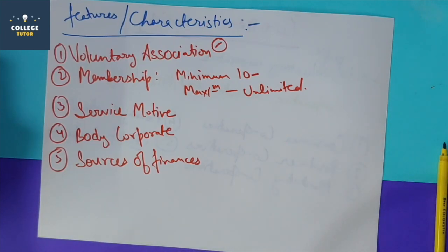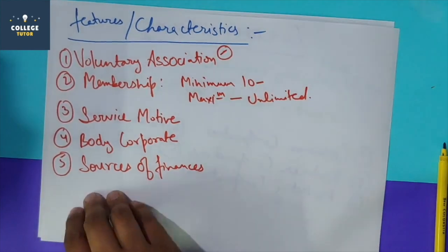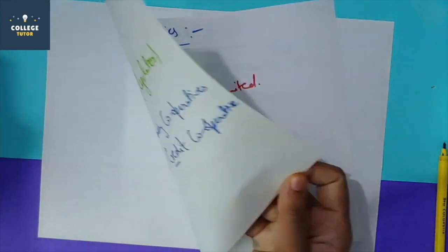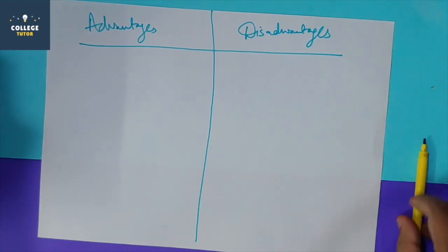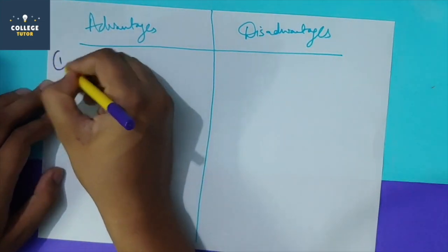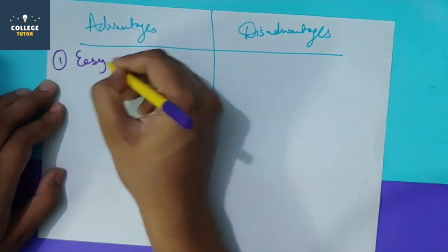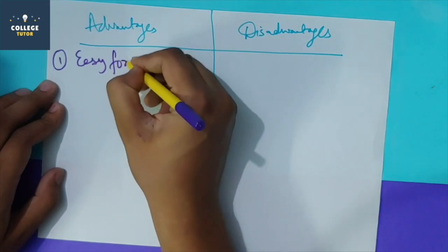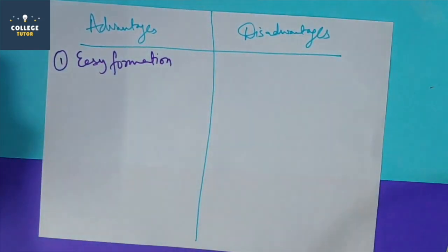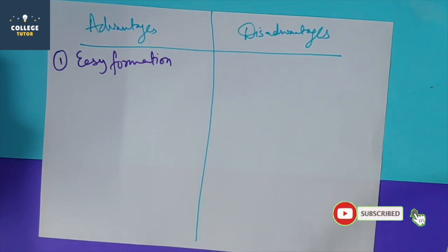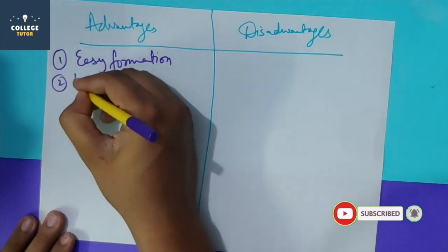Now let's discuss advantages and disadvantages. First, the advantage of easy formation - just like partnership and sole proprietorship. Ten people with common interests can come together and your society is ready. Registration is required, but the registration process has no major complications.